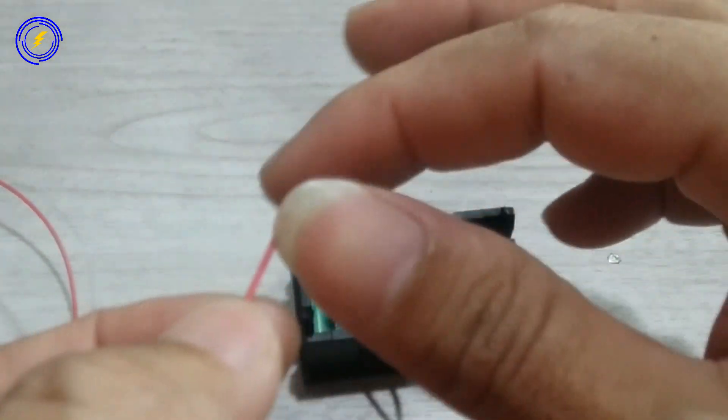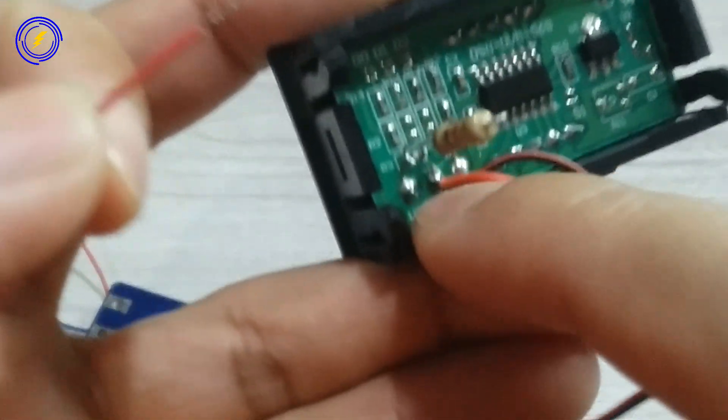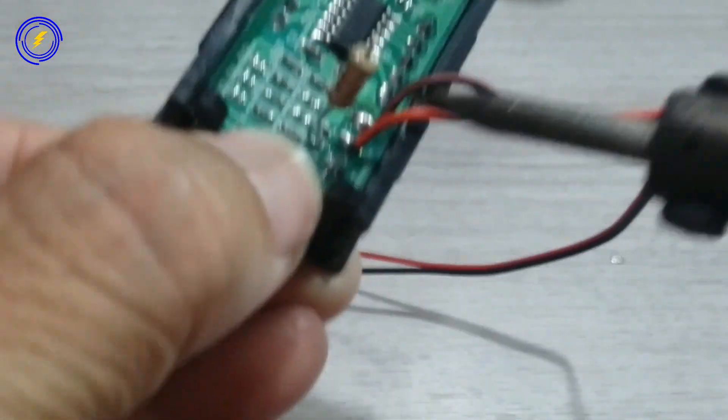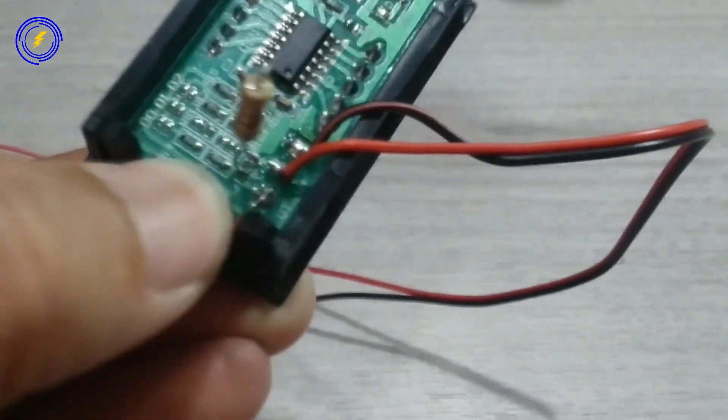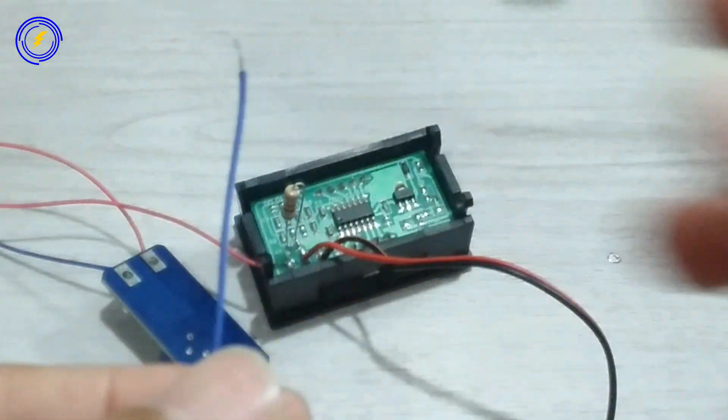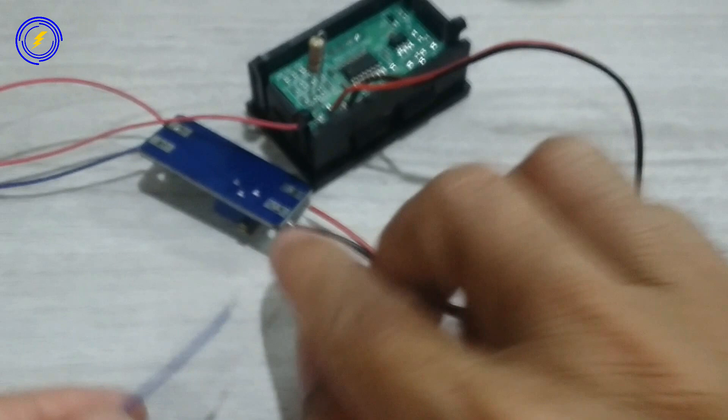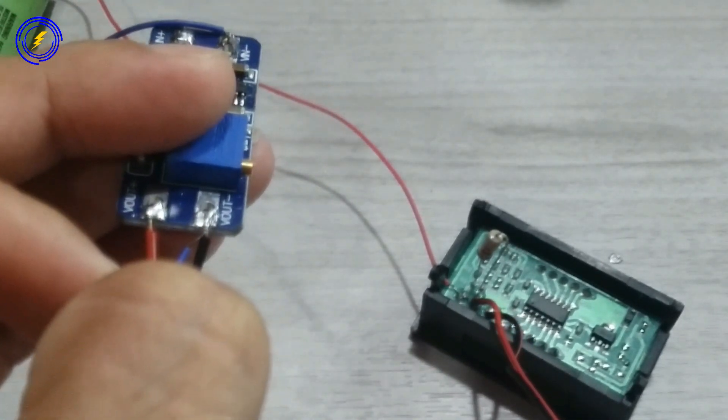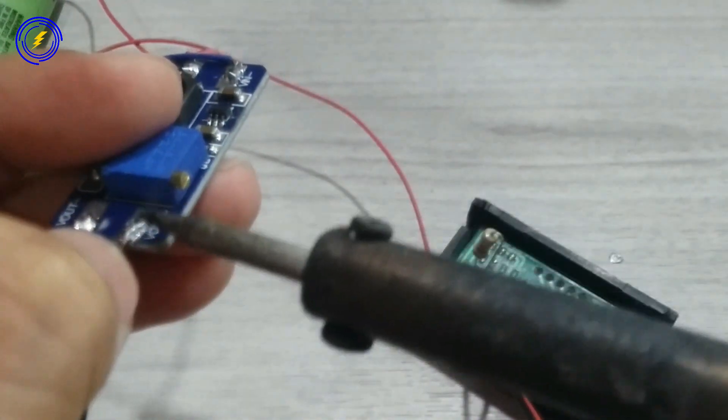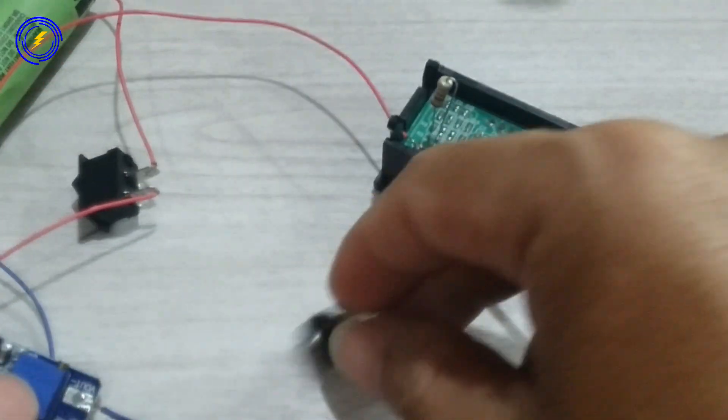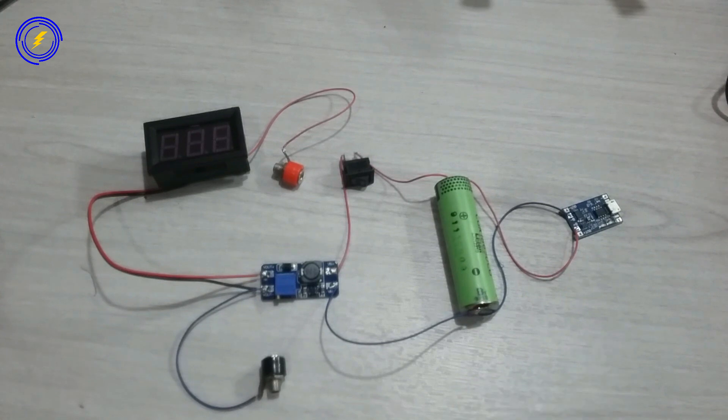Untuk soket banana yang warna merah kita hubungkan ke jalur VT voltmeter. Ini sebagai outnya. Dan untuk soket banana yang hitam kita hubungkan di Out modul Step up yang warna hitam atau yang negatif. Sudah jadi rangkaiannya. Kalian perhatikan untuk jalurnya seperti ini.